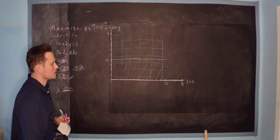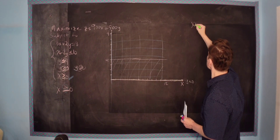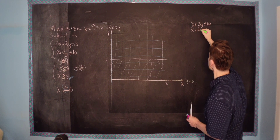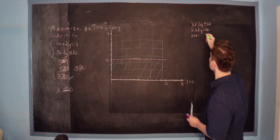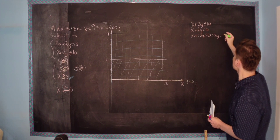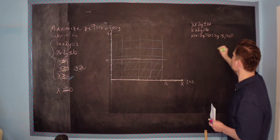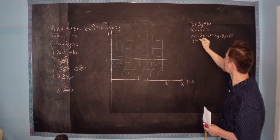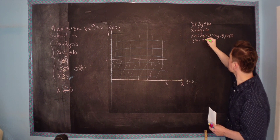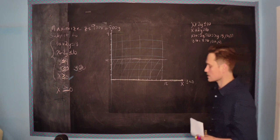Next: x plus 2y is less than or equal to 10. First, pretend it's an equation: x plus 2y equals 10. When x is 0, you get 2y equals 10, so y equals 5 — giving the point (0, 5). When y is 0, you get x equals 10 — giving the point (10, 0). So now we can mark these two points.